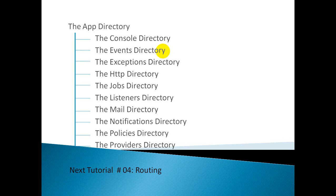Then comes the Exceptions directory, which contains the application's exception handler and is also a good place to put any exceptions thrown by the application. Then we have the HTTP directory, which contains the controllers, middleware, and form requests — almost all of the logic to handle requests entering the application. We can also look at the Jobs directory, which by default we don't get, but we can create it with the Artisan command make:job.